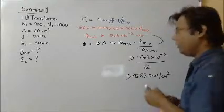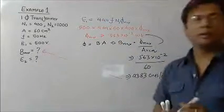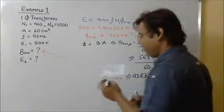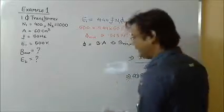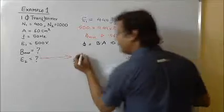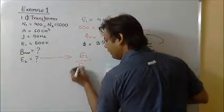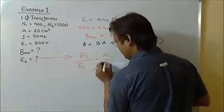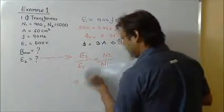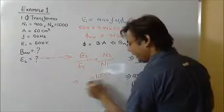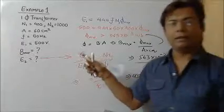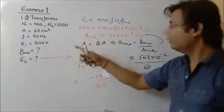So I got one thing which is called Bmax. In the same way I can find E2 also because we know one more formula. That formula is E2/E1 equals N2/N1, which equals—N2 is given as 1000, N1 is given as 400, and E1 is also given as 500.